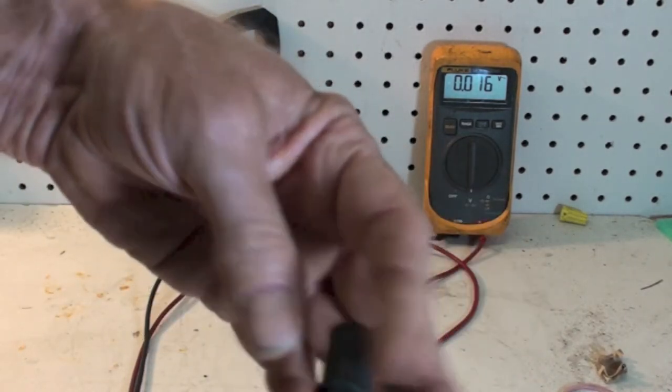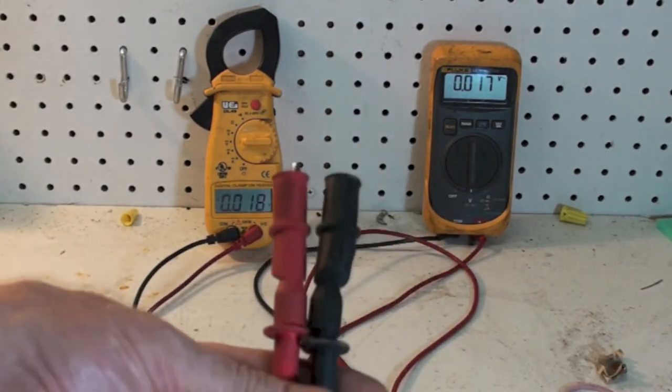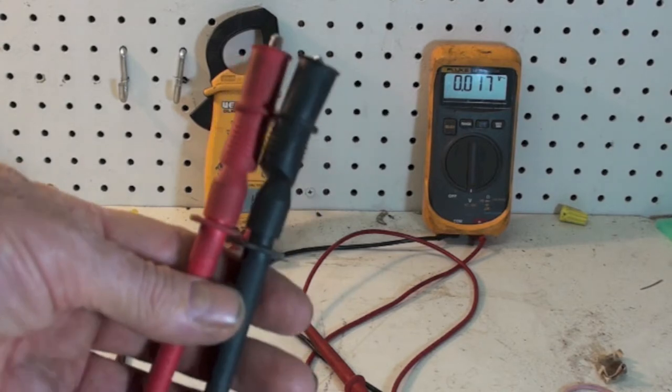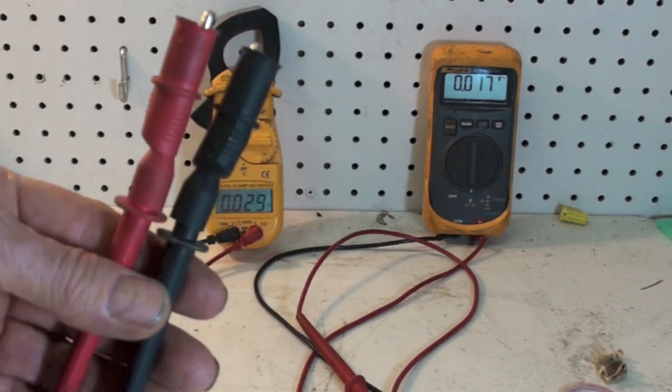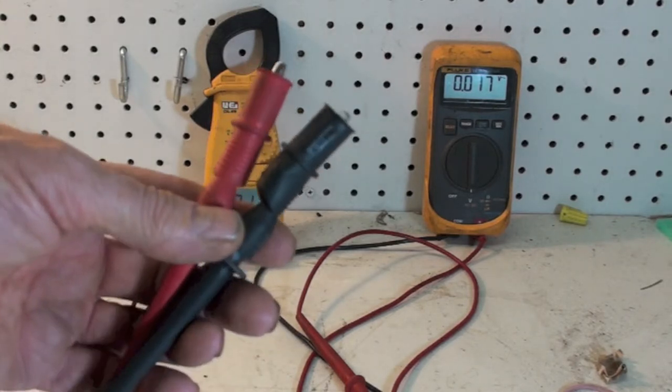You can get these from anybody—Fluke makes them too—but I'm just noticing that the UEI came with them with the meter. Kind of neat because if you have a terminal someplace you want to hold it on.